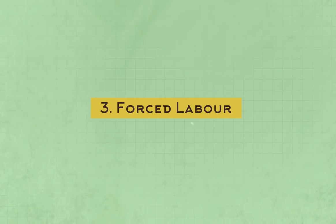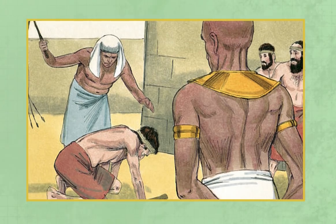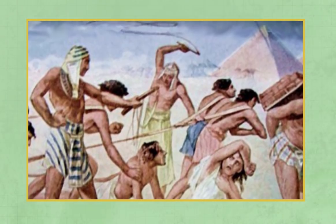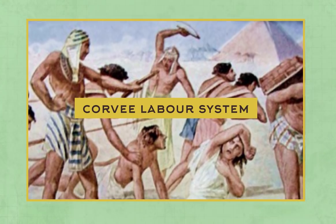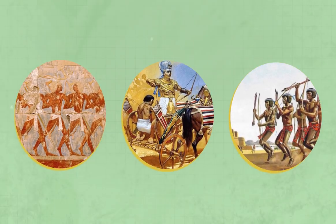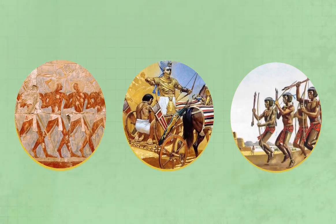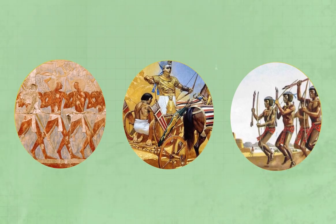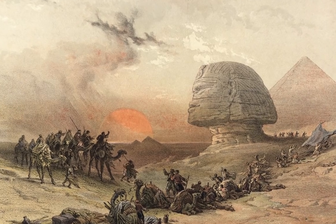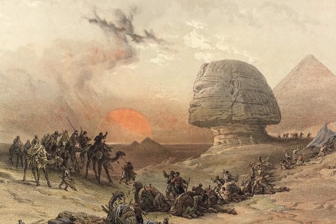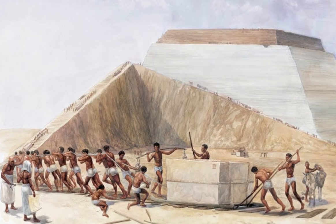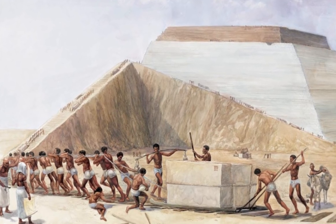Number three: forced labour. This is where the ancient Egyptian government drafted workers from the general population — called the corvée labour system, meaning unpaid or forced. This could be anything from military expeditions to get more chattel slaves, mining and quarrying, or construction projects — anything the state deemed it required help on. This is also where the belief that slaves built the pyramids came from, although, as already covered, this has since been disproved.